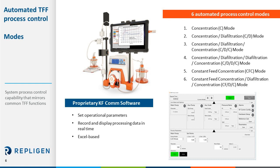The KR2i pump can be controlled manually or automatically with six different automated TFF modes. The modes of operation include concentration, diafiltration, constant feed concentration, and combinations of these. Users can input the desired operating TFF parameters through the KFCOM interface. KFCOM will also record and display process data including pressure profiles, concentration factors, and filter flux in real-time. The control screen is easy to navigate and displays pump rates, weights, and pump modes. Both operational and data collection screens are Excel-based so that data can be easily accessed on other computers.